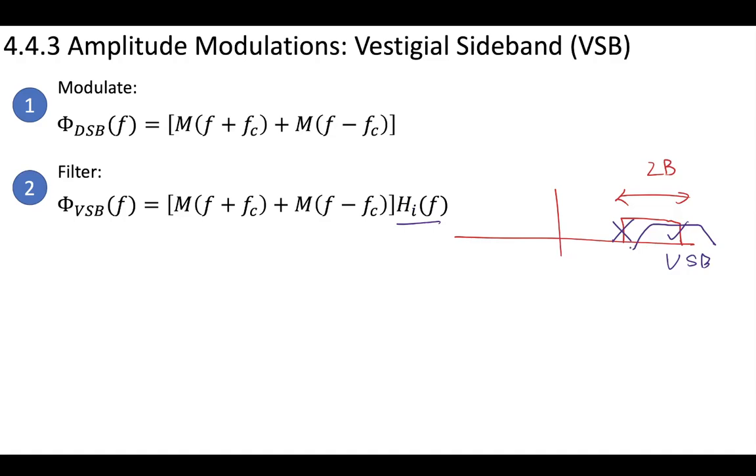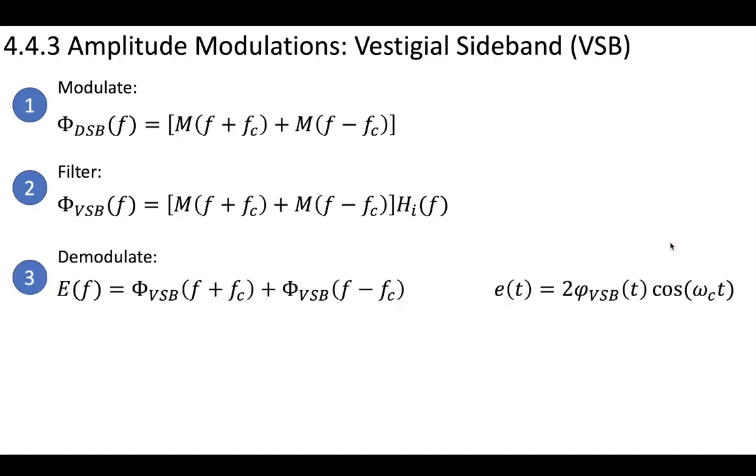And this HI filter is a bandpass filter that is centered at this upper sideband. Now to demodulate this, we're going to need to somehow take this signal, this VSB signal, and move it back down to our baseband signal.